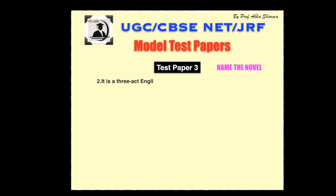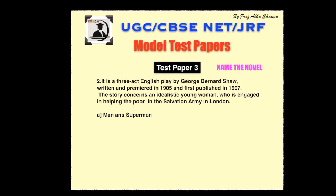Question number two. It is a three-act English play by George Bernard Shaw, written and premiered in 1905 and first published in 1907. The story concerns an idealistic young woman who is engaged in helping the poor in the Salvation Army in London. Options: Man and Superman, Major Barbara, Widowers' Houses, Mrs. Warren's Profession.